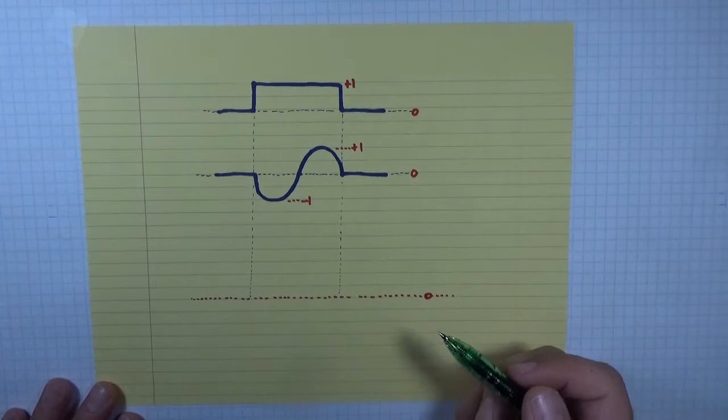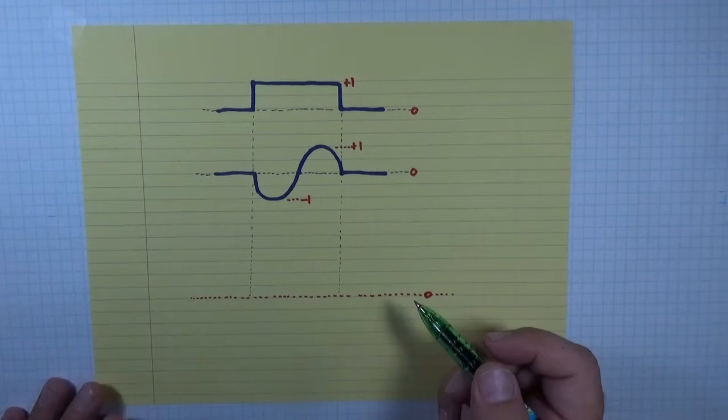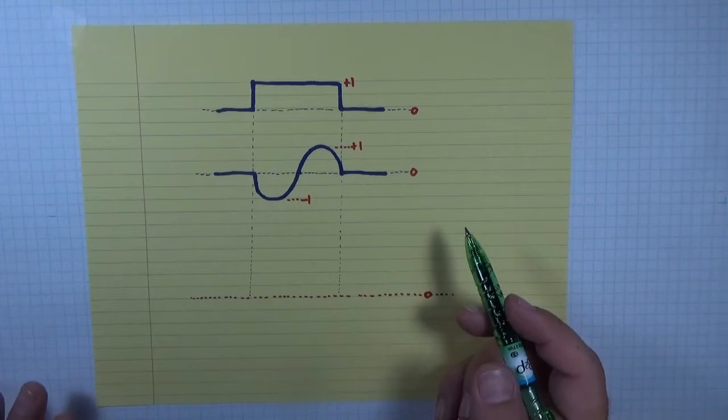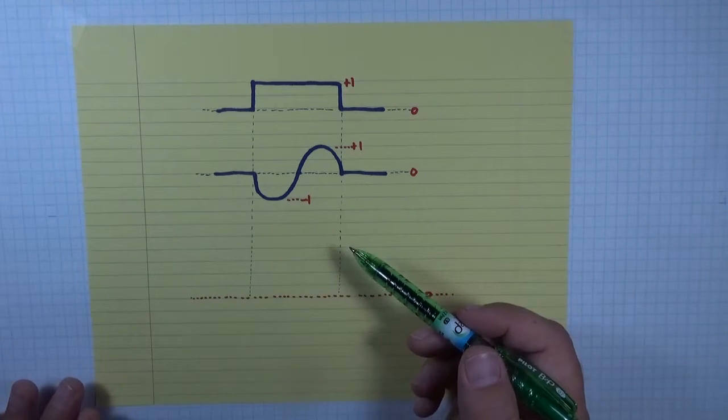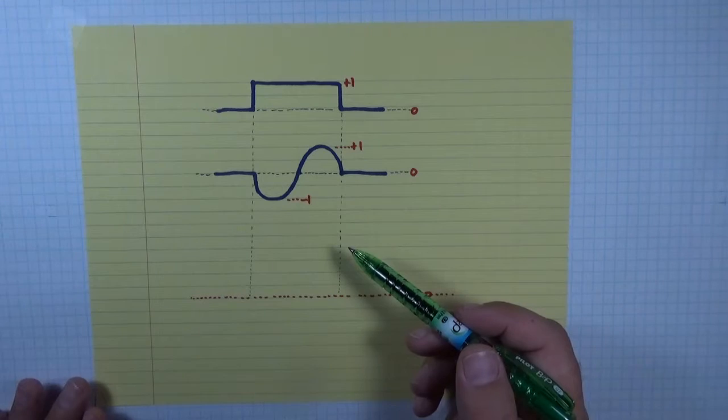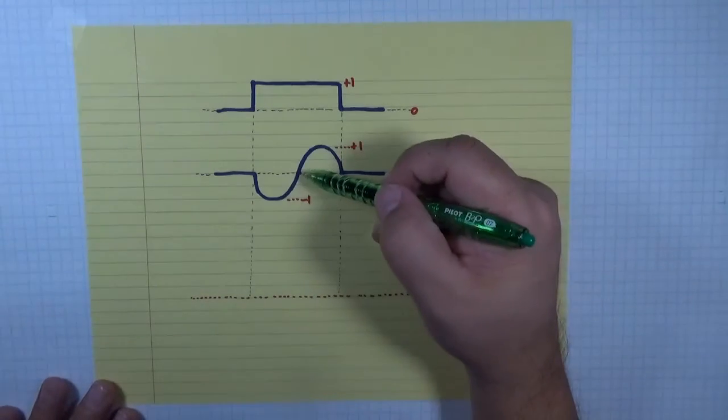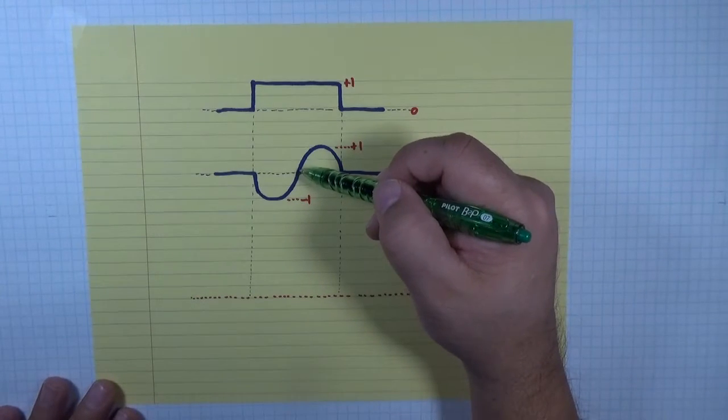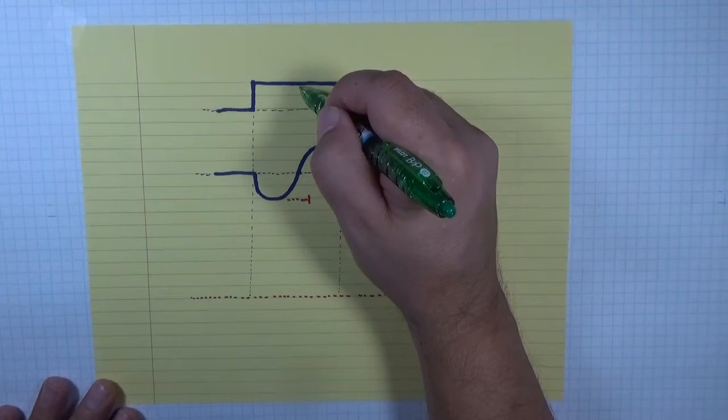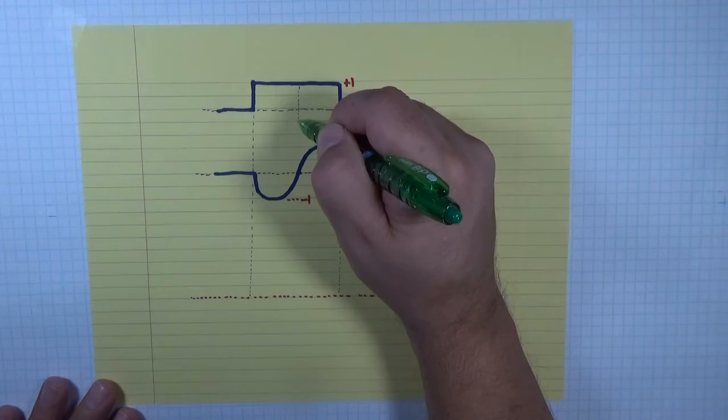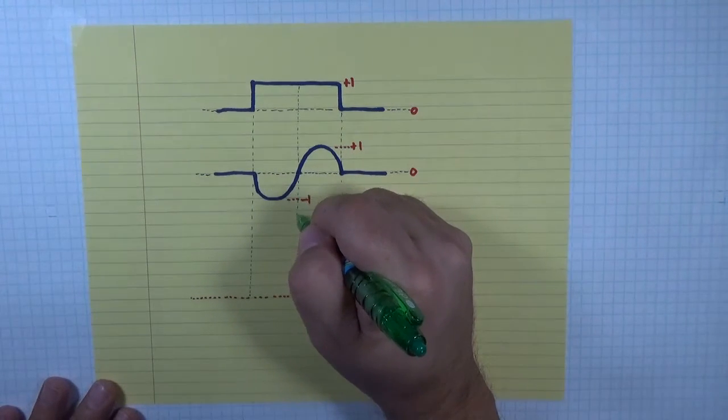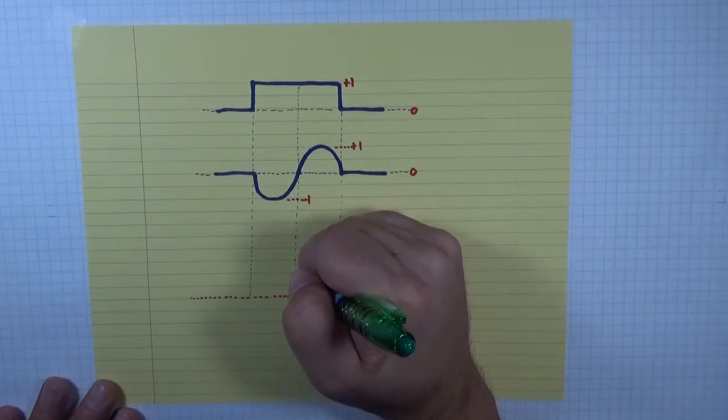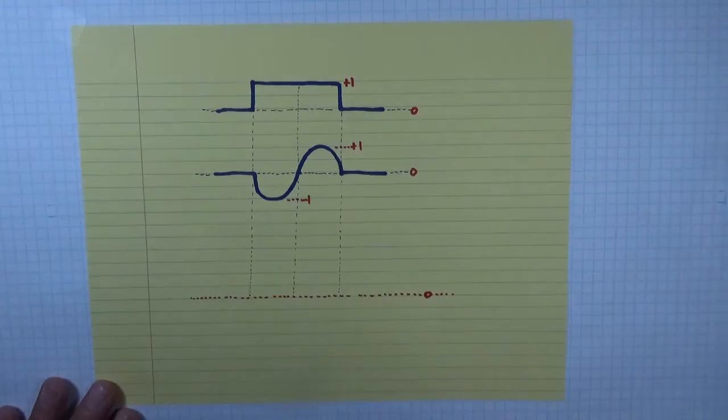And then the question is, should I have any other reference lines? And the truth is you can have as many reference lines as you want. If I drew a zillion reference lines here, it would make it a little complicated. So let me just put one more reference line in, and that's going to be the reference line that goes right through this point right here. So I'm going to draw a reference line from the top pulse down through the bottom pulse, and then all the way down to my summed plot.